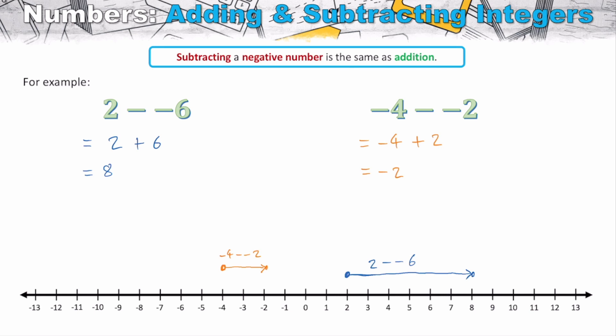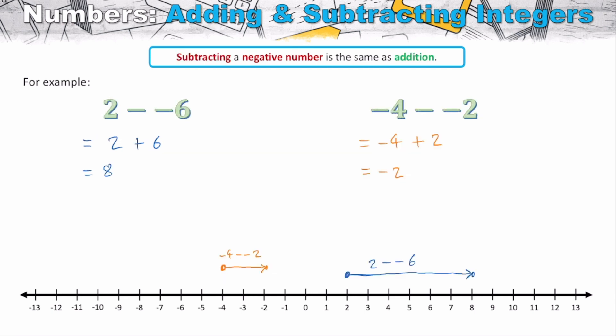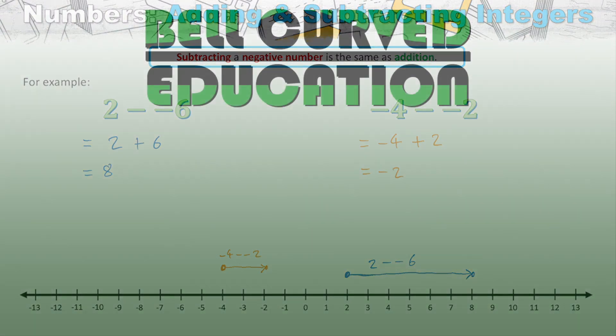Whenever we're subtracting a negative number it's the same as addition. Whenever we're adding a negative number it's the same as subtraction. With these types of problems, I recommend rewriting the problem to what we are essentially doing, then use the number line to assist you — where you're starting, which direction it moves, and where you finish.